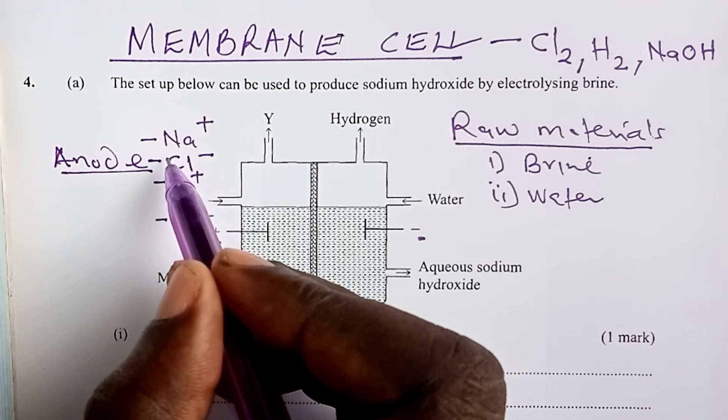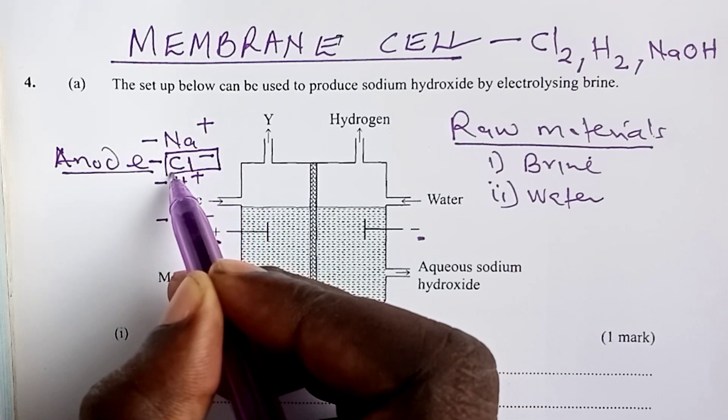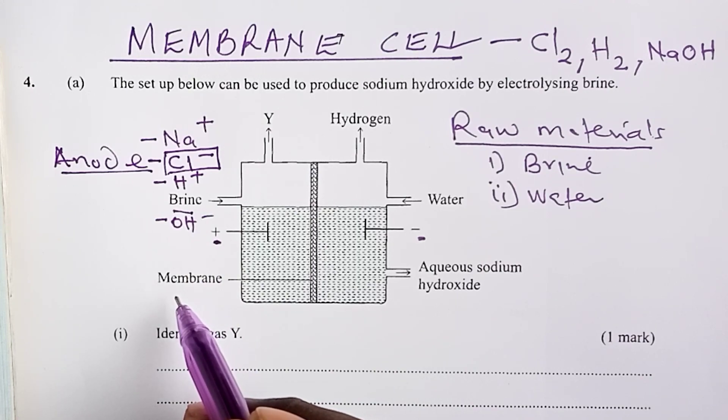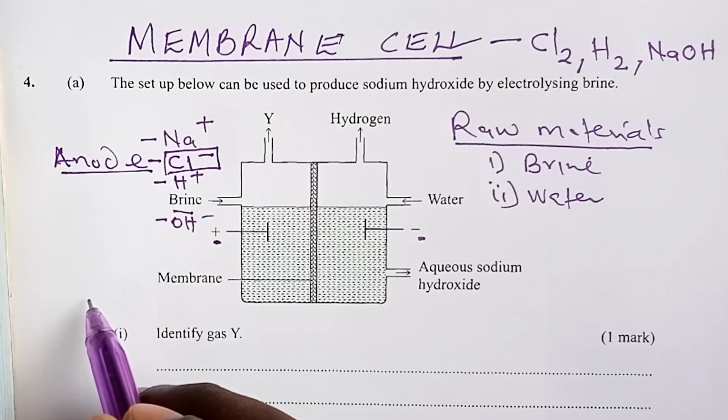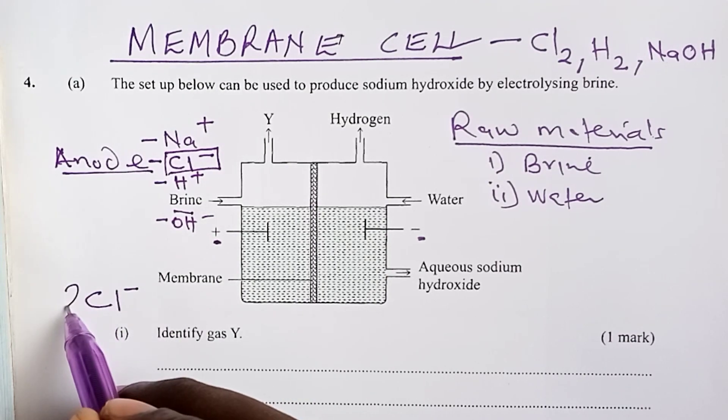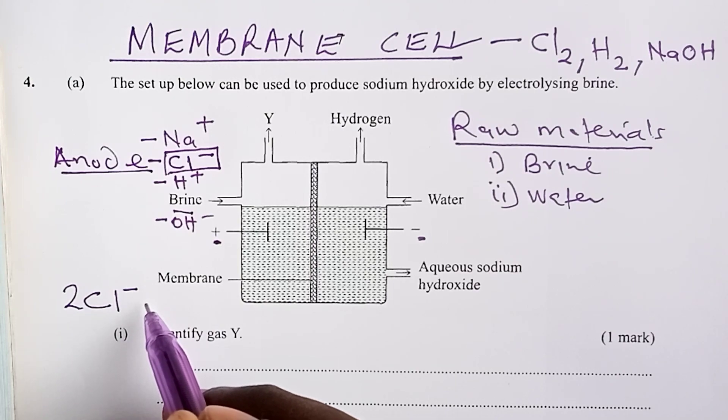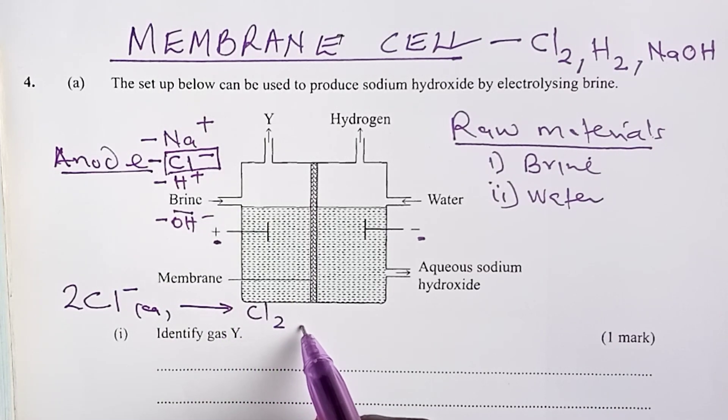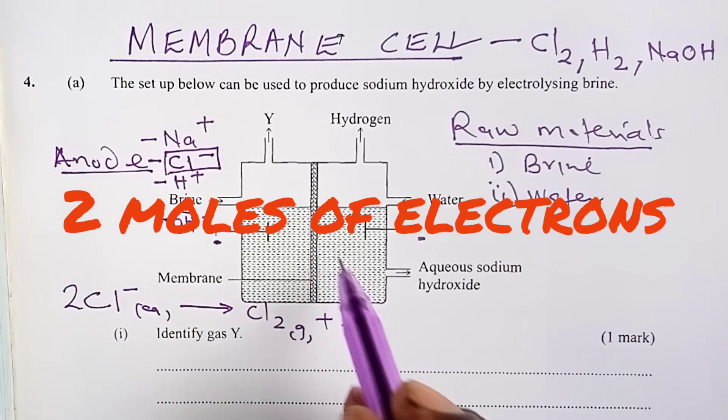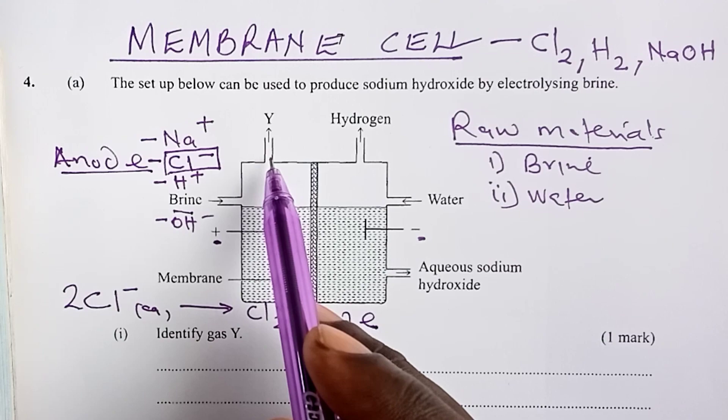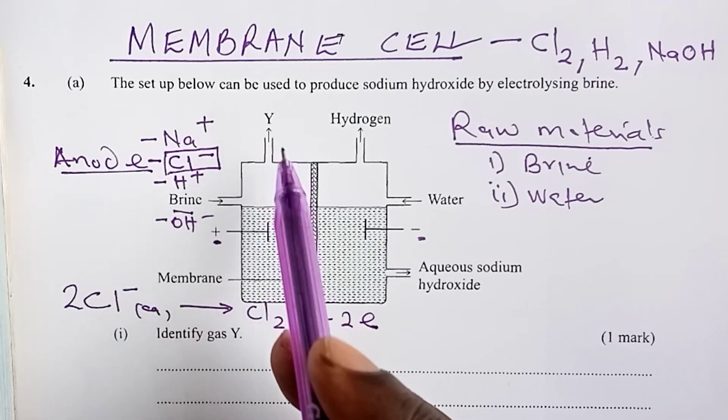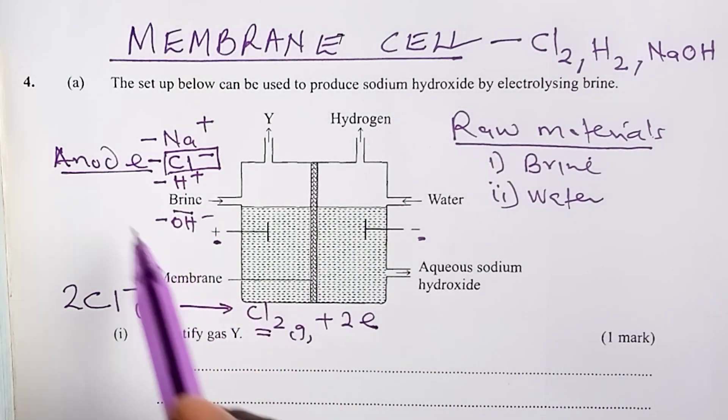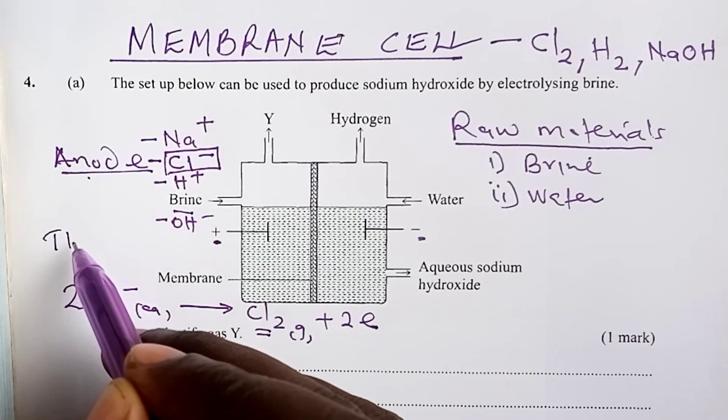So, because chloride ions are highly concentrated as compared to hydroxyl ions, they get preferentially discharged at anode. And therefore, the equation at anode is that two chloride, two moles of chloride ions in aqueous state are able to be discharged to give one mole of chlorine gas and two electrons. So, the gas that leaves through opening Y, or the gas that leaves as gas Y, is actually chlorine gas. Another thing we need to note is that our anode is made of titanium.